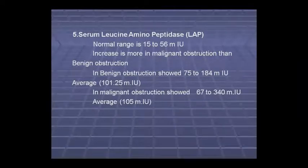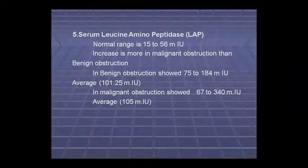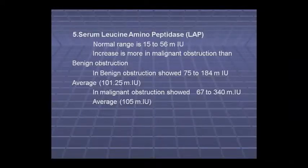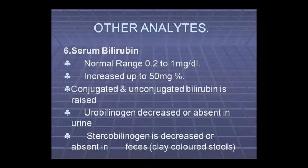In benign obstruction, values are 85–184 mIU, and in malignant obstruction, values are 67–340 mIU.